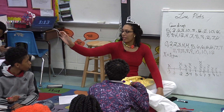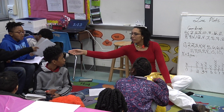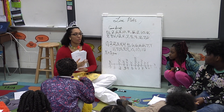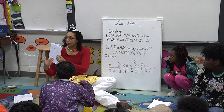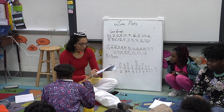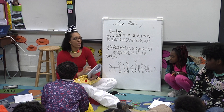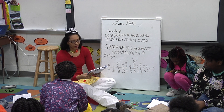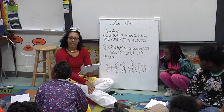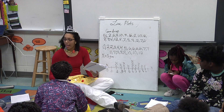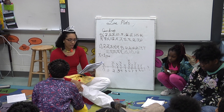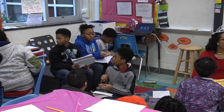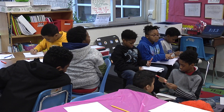Let me shout out Tyshawn. When he finished his line plot — which is so beautifully illustrated, everyone see this? Beautiful! — he started writing some questions. One question was: how many people had six gumdrops? And then he's working on the second one. I like that. Give him a gold coin, everyone. Give him a round of applause.